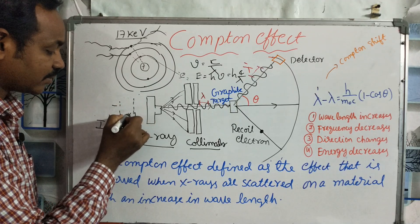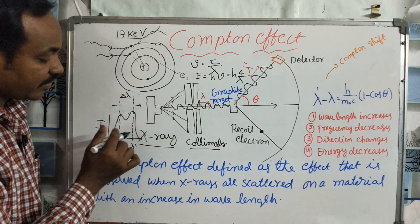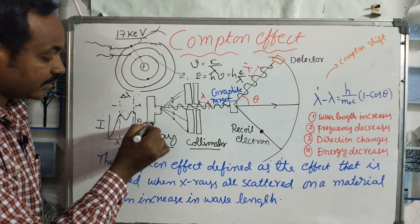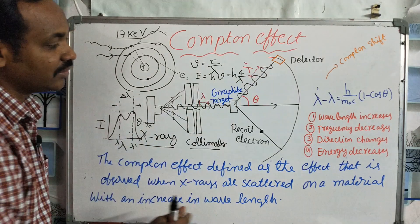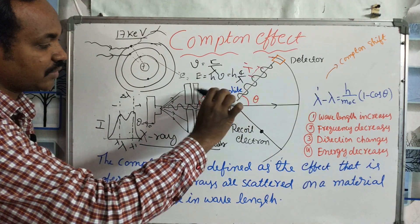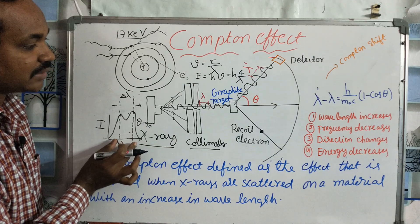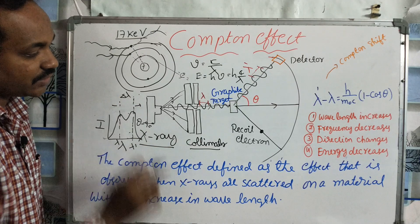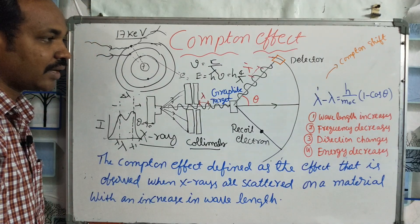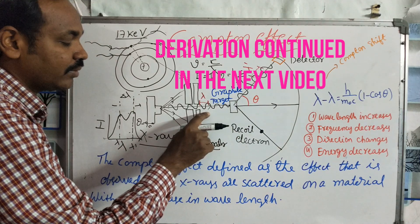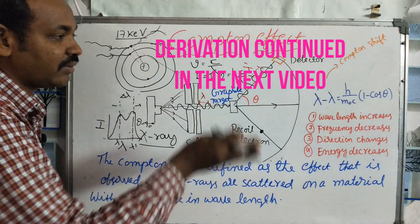Delta lambda is the Compton shift — it is constant for a given angle. The angle theta at 90 degrees gives a specific shift. At 90 degrees versus 180 degrees, the wavelength shift changes. The maximum Compton shift occurs at 180 degrees (backscattering). The equation links h divided by m_e c (Compton wavelength) with the change in wavelength. After scattering, the X-ray wavelength is changed by this amount.